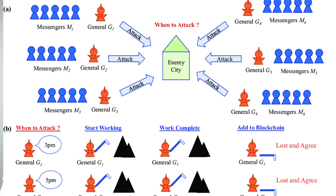Imagine you have a city with generals all around it, and they need to all attack at the same time to take the city. If they don't attack at the same time, they will fail — they have to coordinate. In a low-trust environment, how do you get people to all agree on something when there's low trust or no trust? You've got these generals surrounding the city sending encrypted messages back and forth, but they don't know who's being honest and who's not.